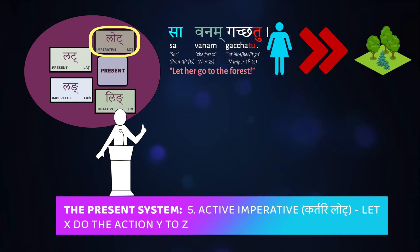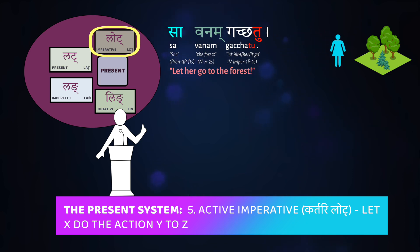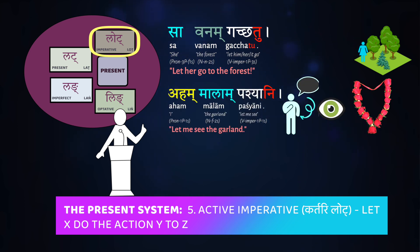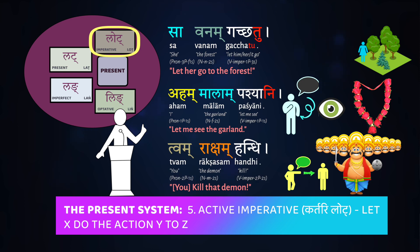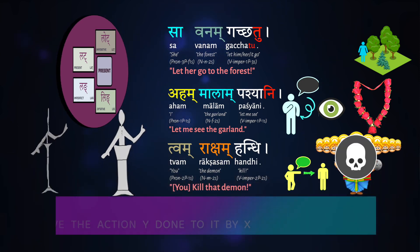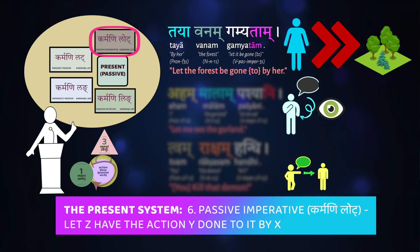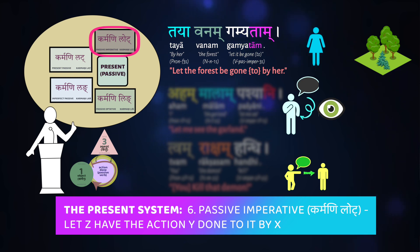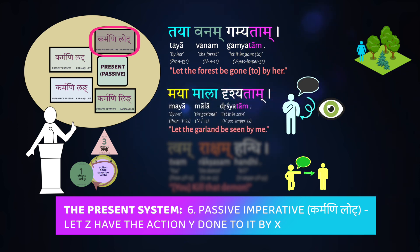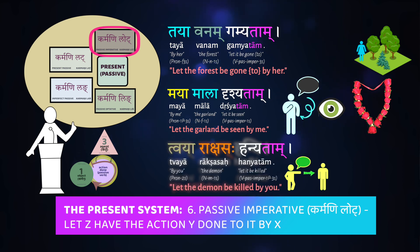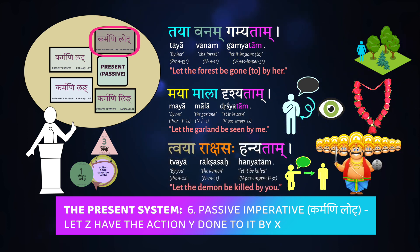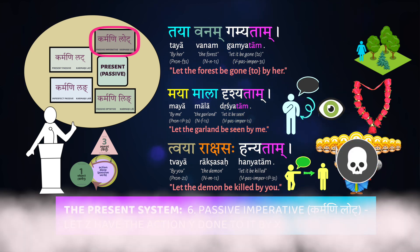So: sa vanam gachatu — let her go to the forest; malam pashyani — let me see the garland; rakshasam handhi — kill that demon. We can also do passive imperatives, which are based off of the passive stem. So: taya vanam gamyataam — let the forest be gone to by her; maya mala adrushyataam — let the garland be seen by me; tvaya rakshasaha hanyataam — let the demon be killed by you.